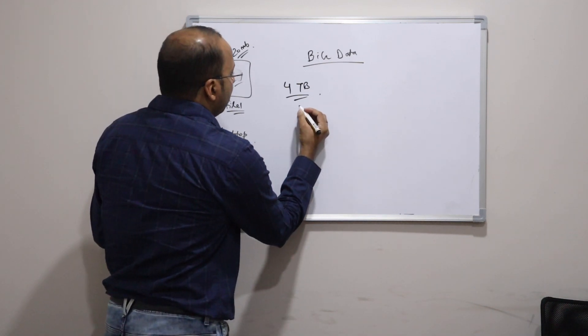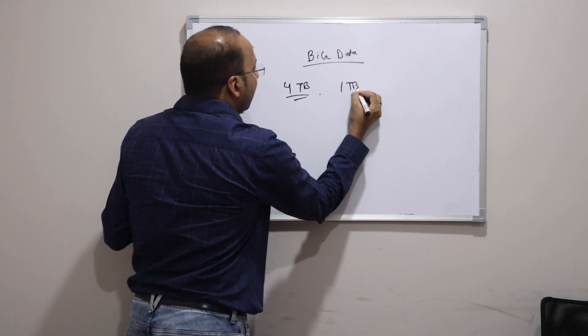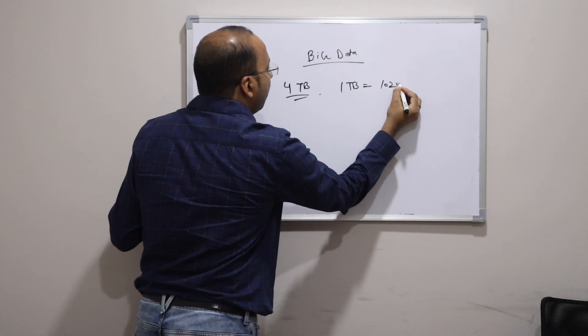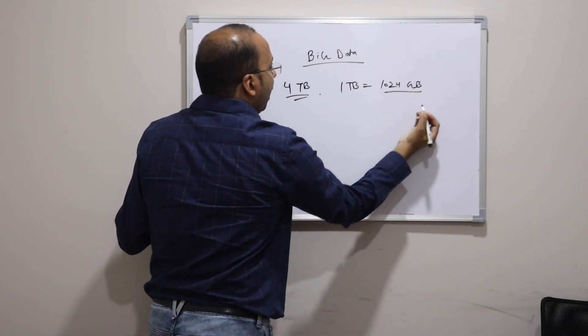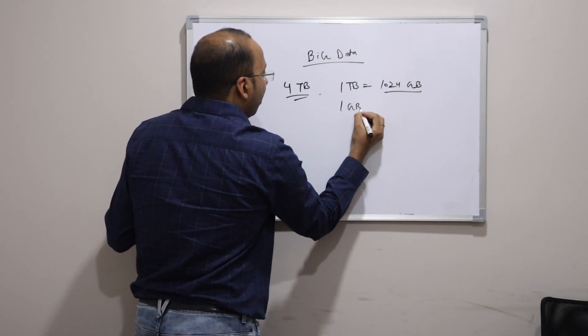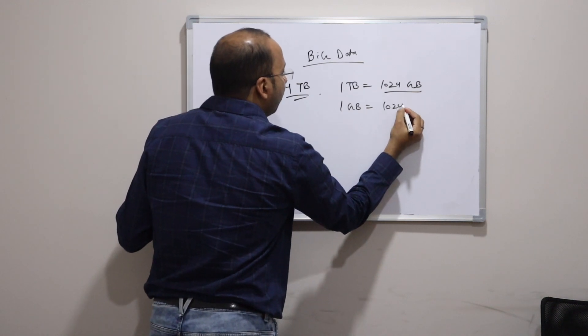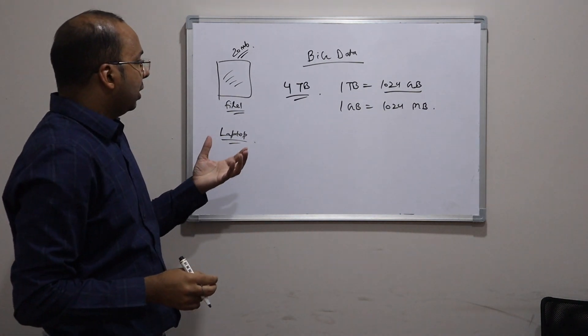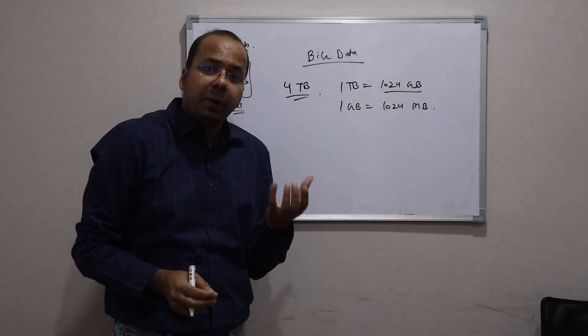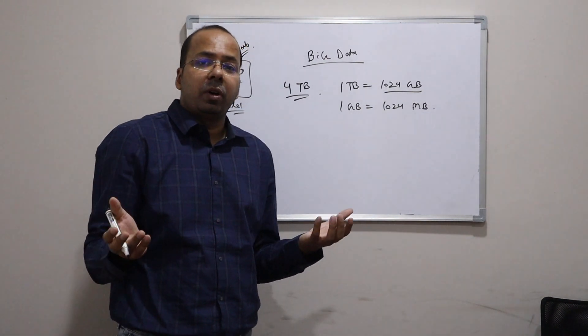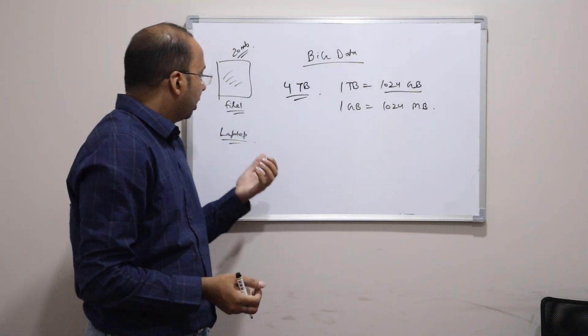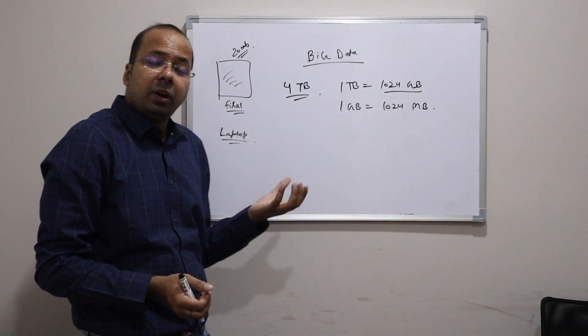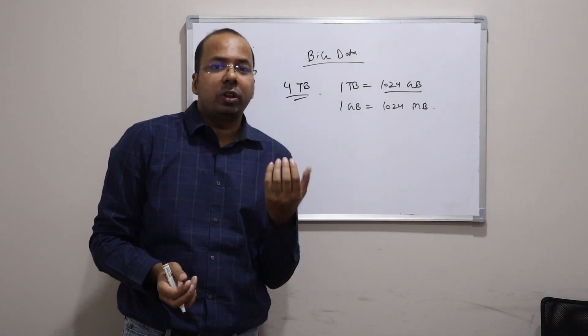By the way, just to let you know, 1 TB equal to 1024 GB. And 1 GB equal to 1024 MB. So you can understand 4 TB is quite a big data that we are talking about, which definitely my laptop won't be able to handle or store that file.